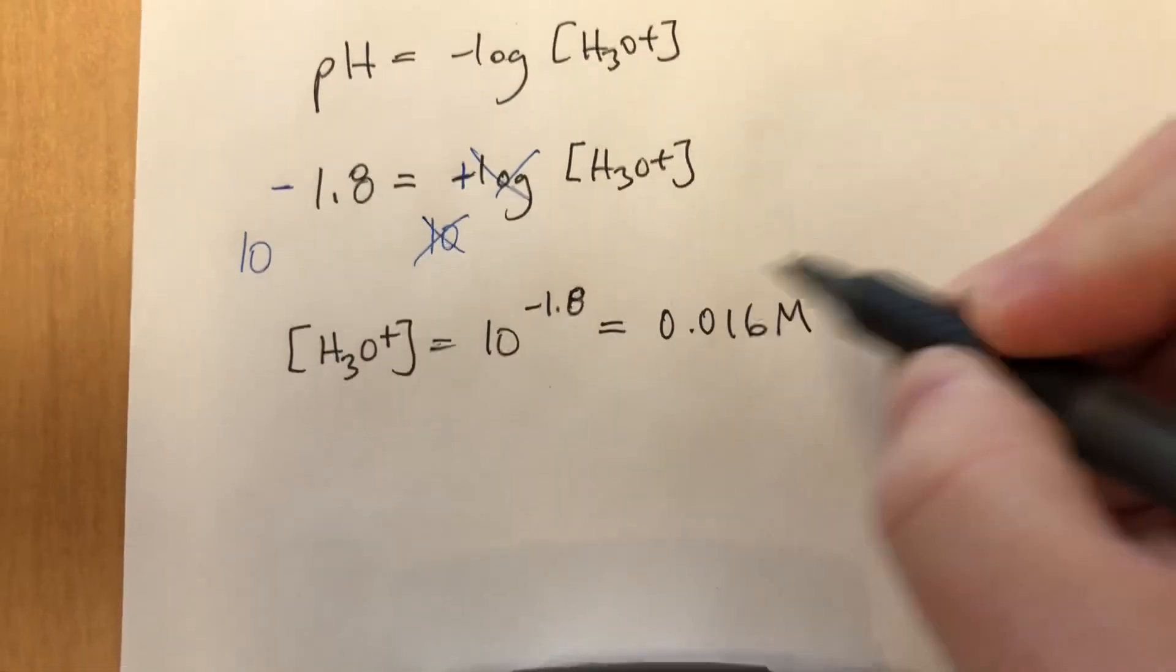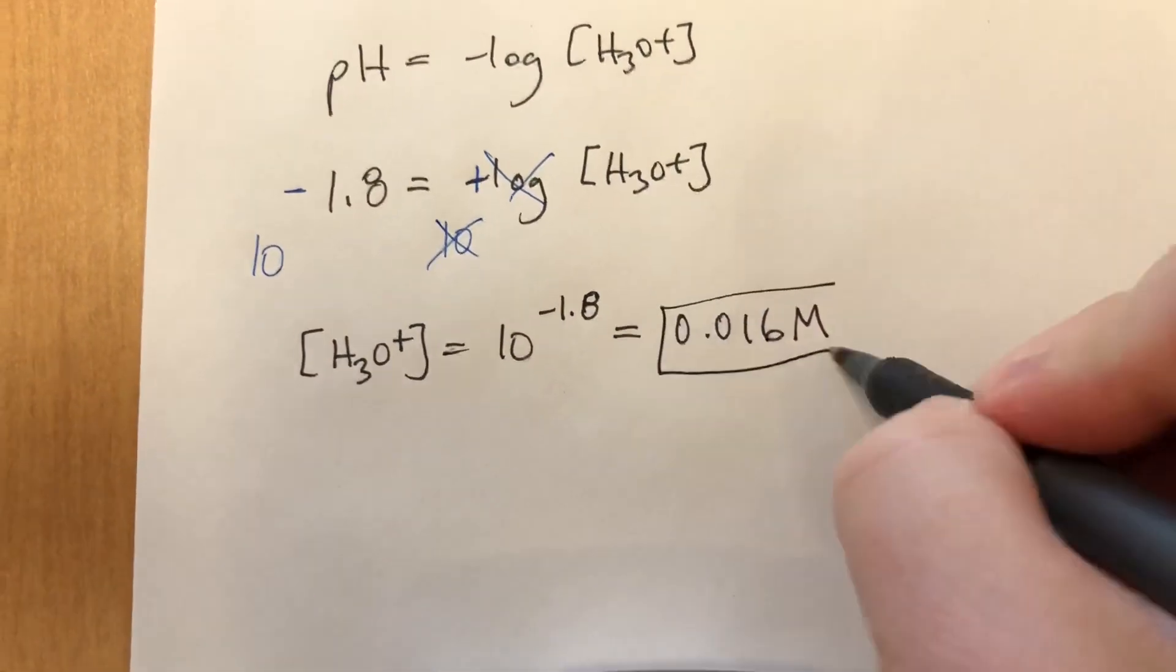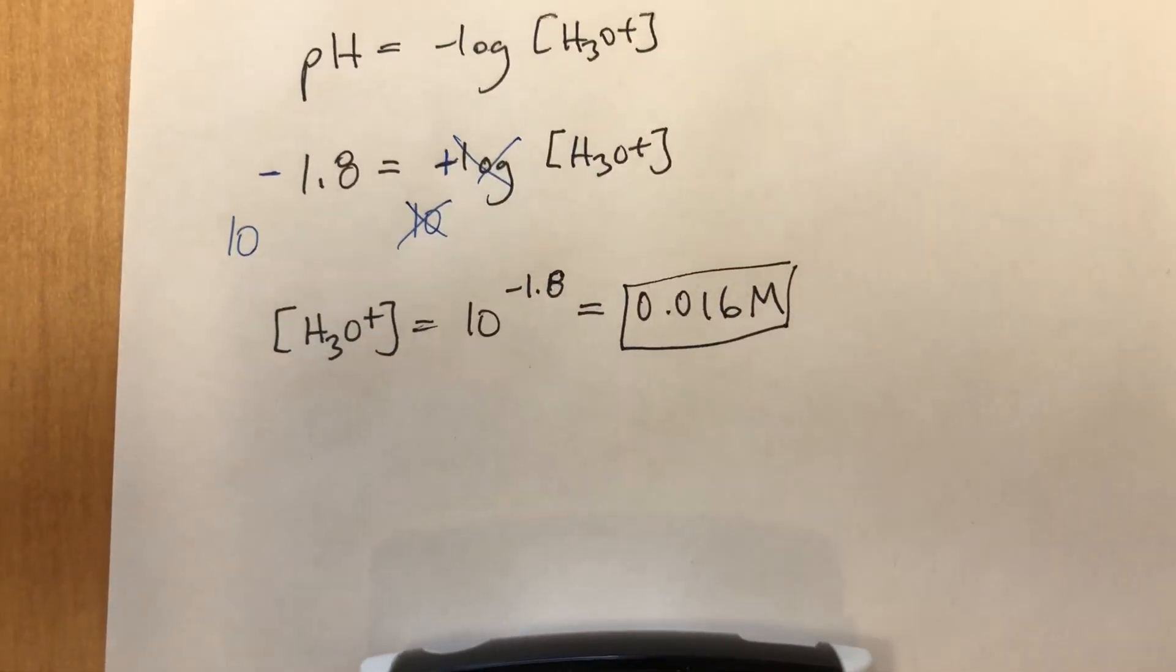And although pH has no units, this has to be in molarity for this to make any sense. So the answer has to be 0.016 molar.